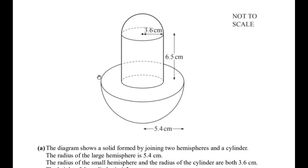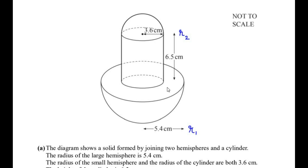The solid is made up of two hemispheres — this is the first hemisphere and this is the second — connected by a cylinder. The radius of the larger hemisphere is 5.4, let us consider this as r1. The radius of the small hemisphere is 3.6, let us consider this as r2. The radius of the cylinder is also 3.6. We have to show the total volume is 692 cubic centimeters.